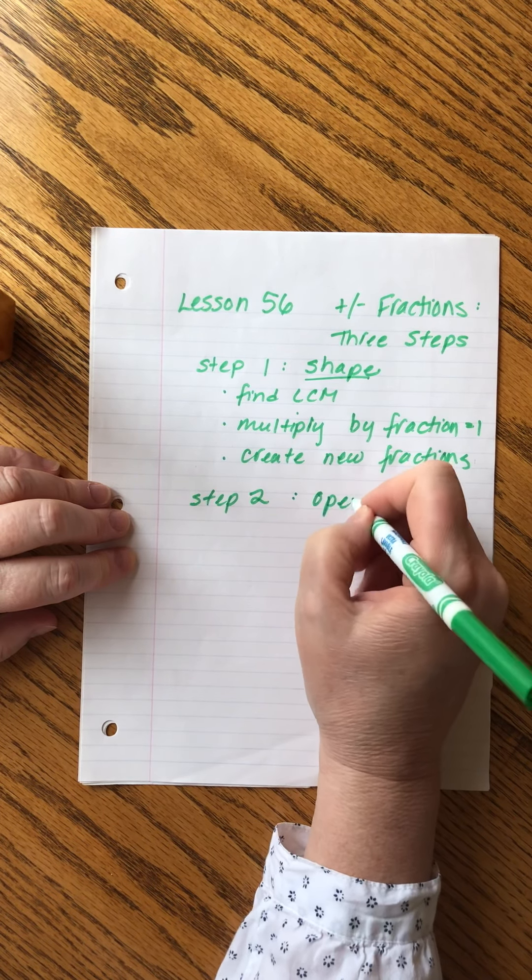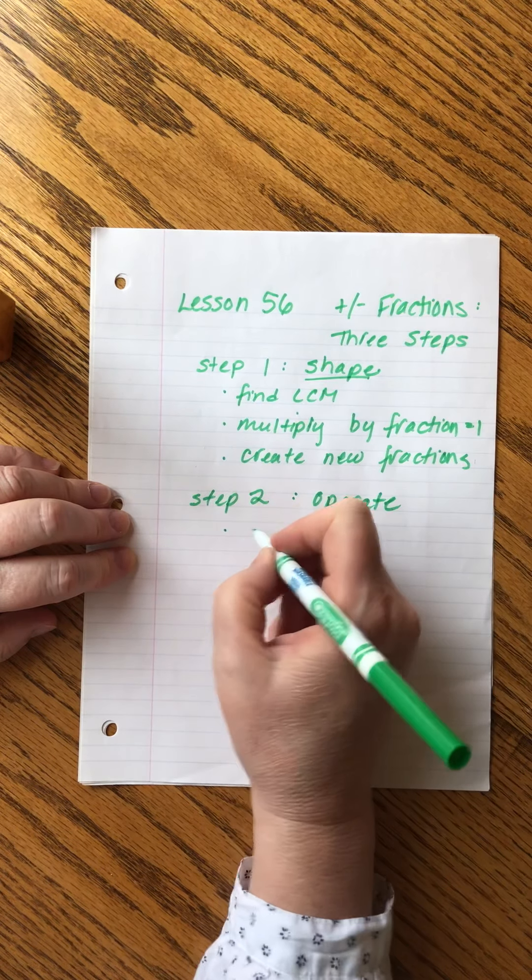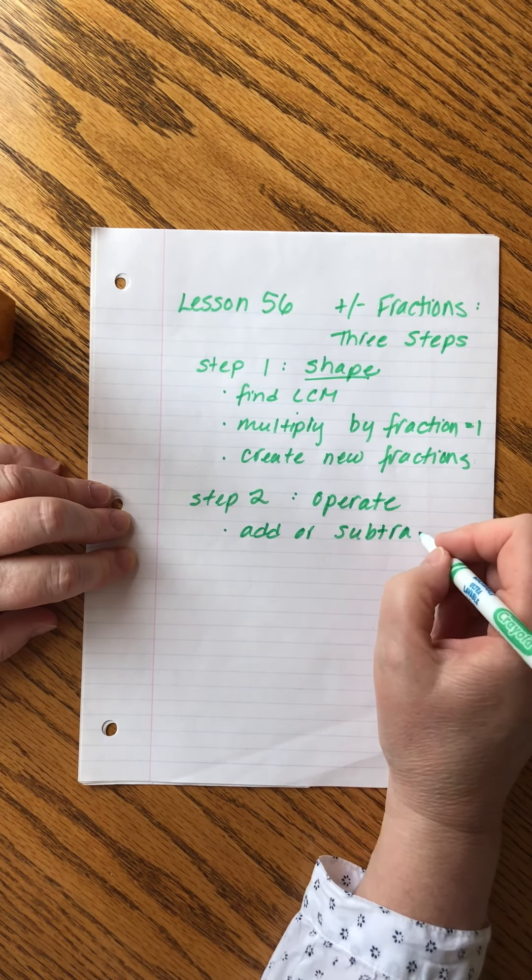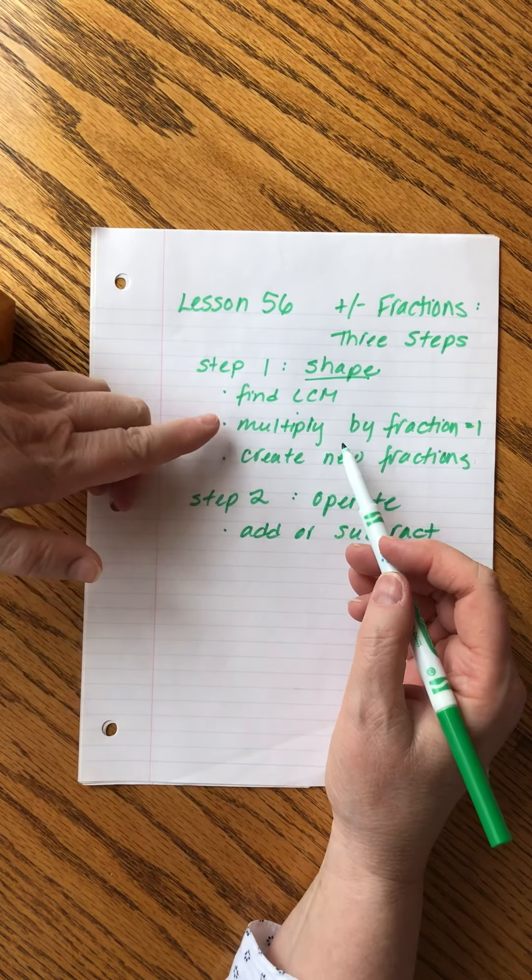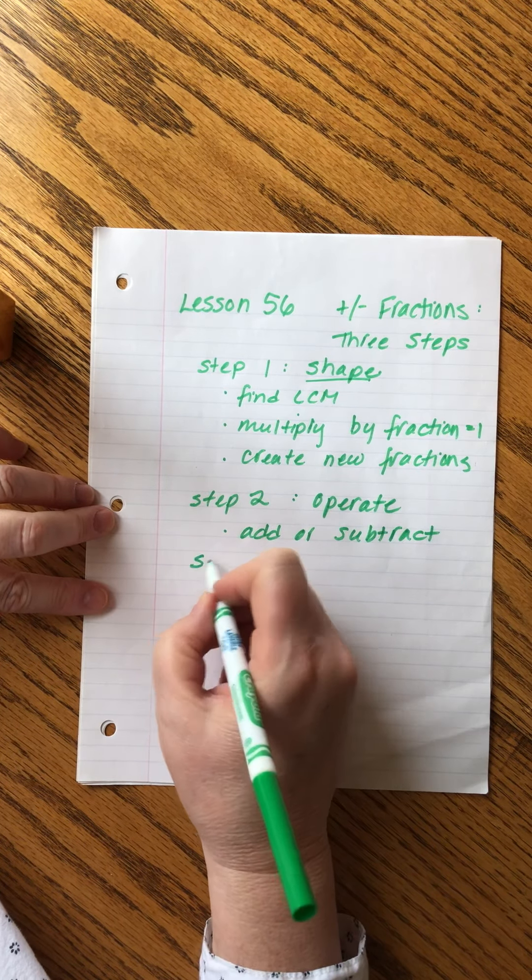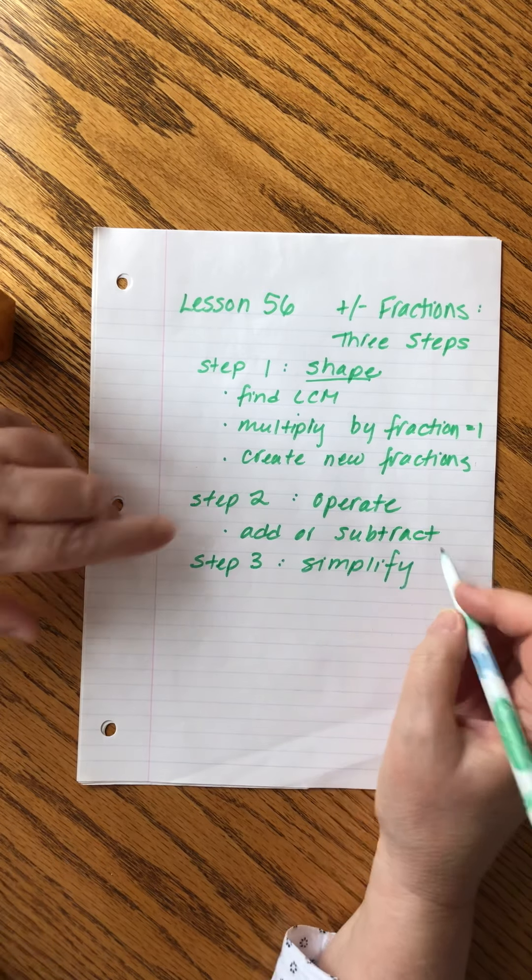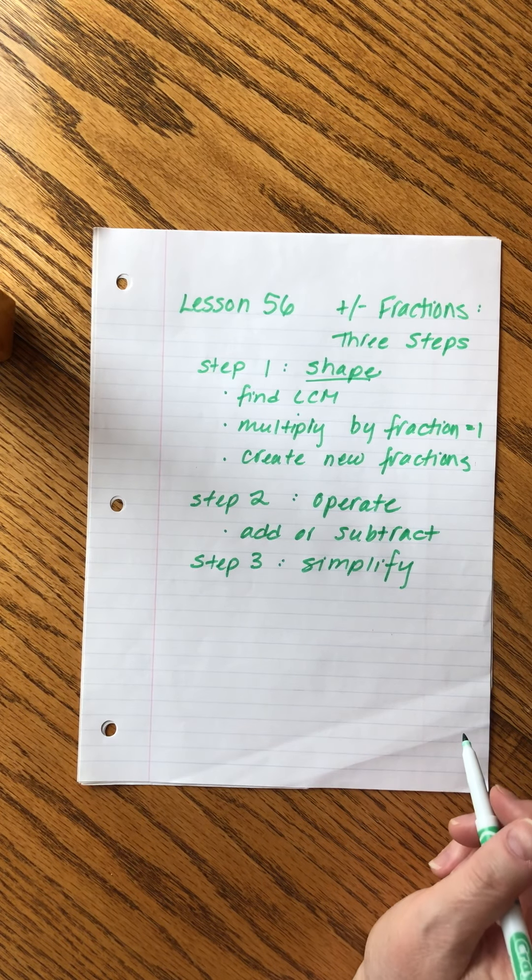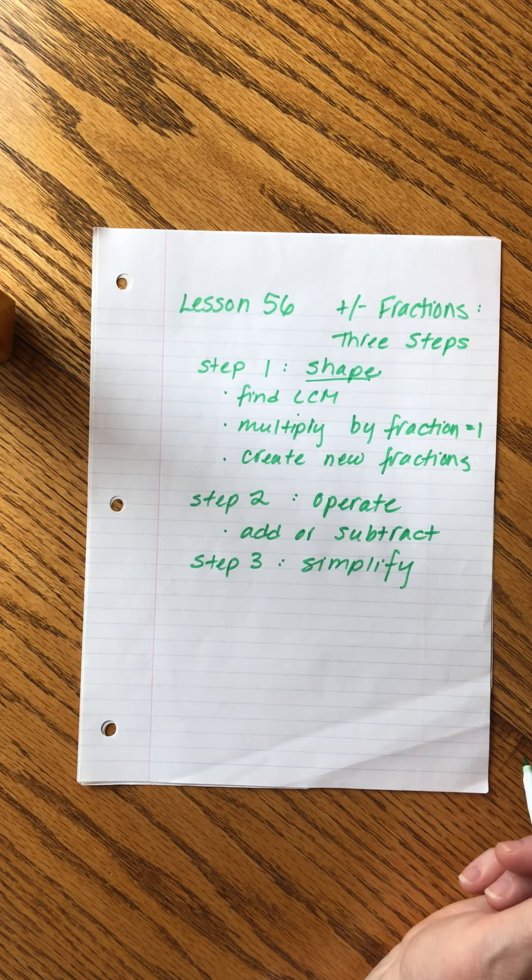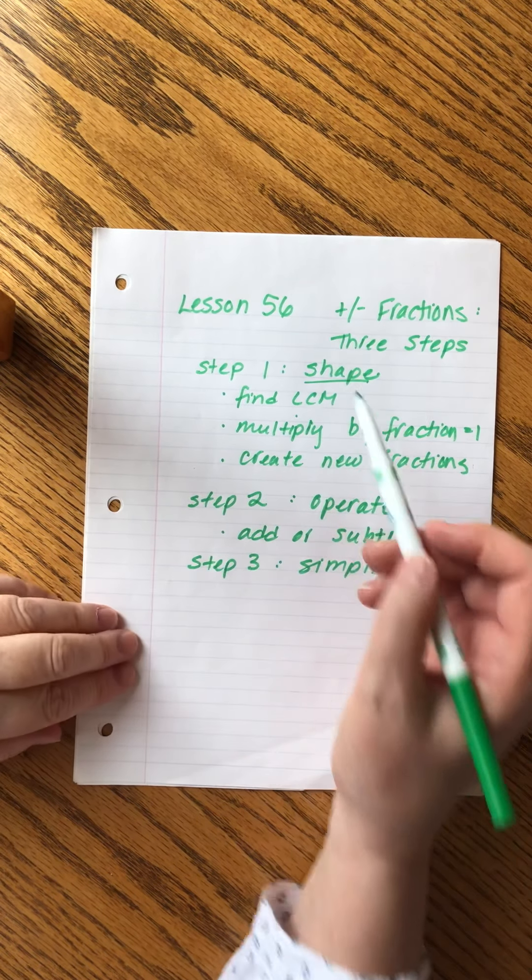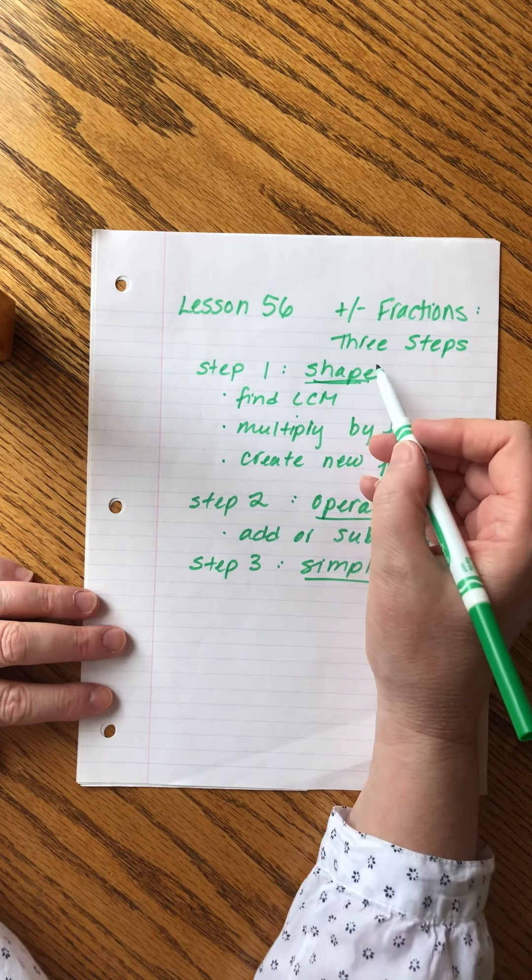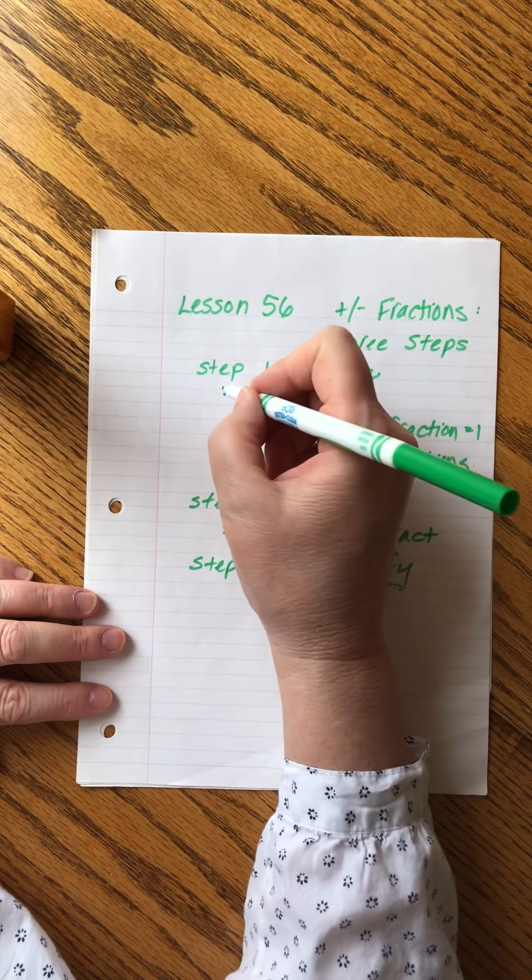Step two is to operate, and that's the simplest part. We simply add or subtract. We call addition and subtraction operations. So this is setting it all up, this is actually doing it. And then the last step, step three, is to simplify. And that's after we do the calculation, just cleaning it up as can be. So we're going to work two examples, one addition and one subtraction for fractions.